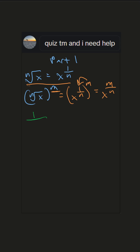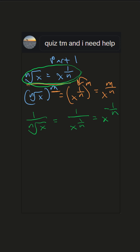Now what if we have 1 over the nth root of x? We already showed the nth root of x is x to the 1 over n, so this will be 1 over x to the 1 over n. Now when exponents are in the denominator, you can change the sign and bring them up to the numerator, so this will be x to the negative 1 over n.